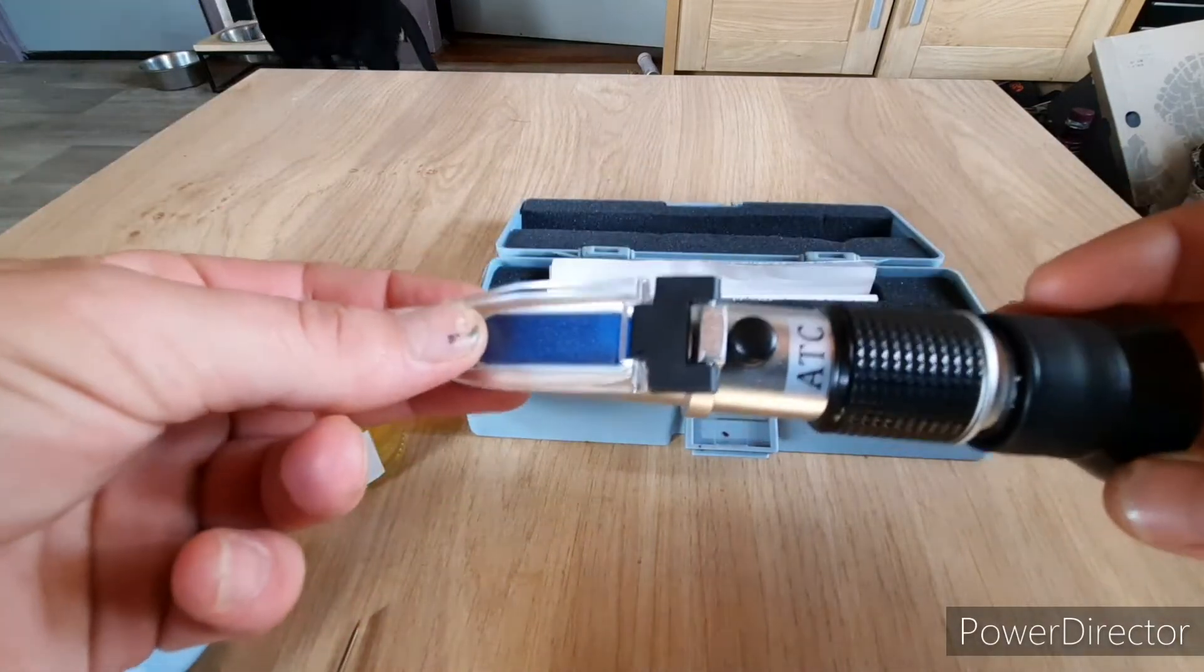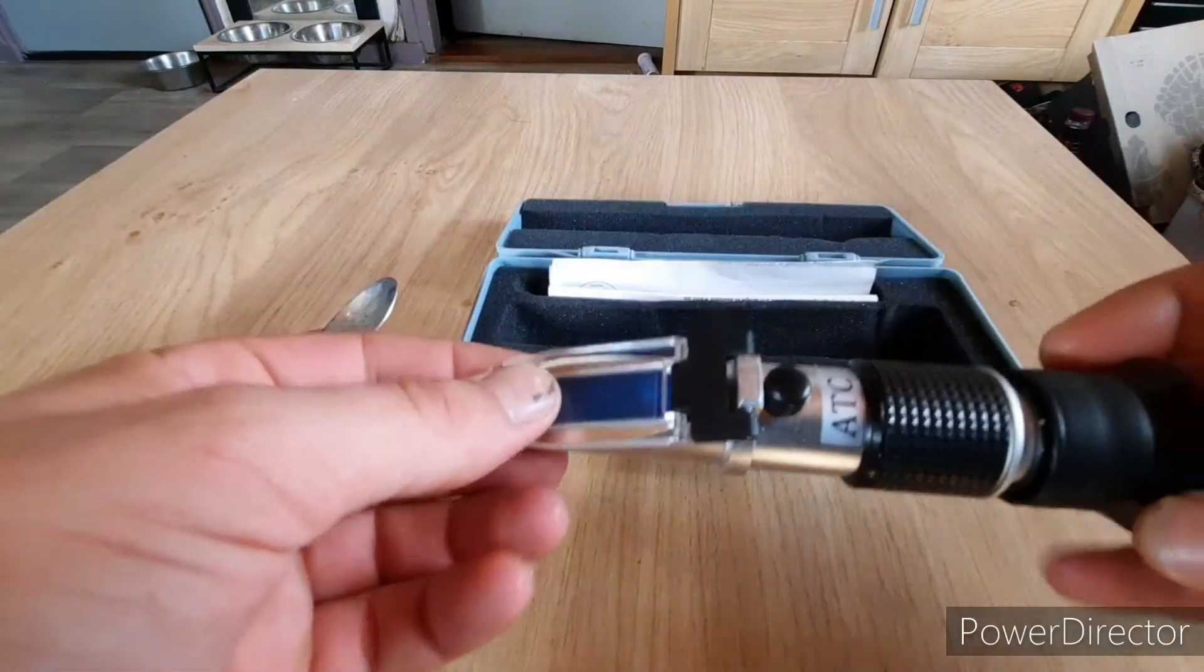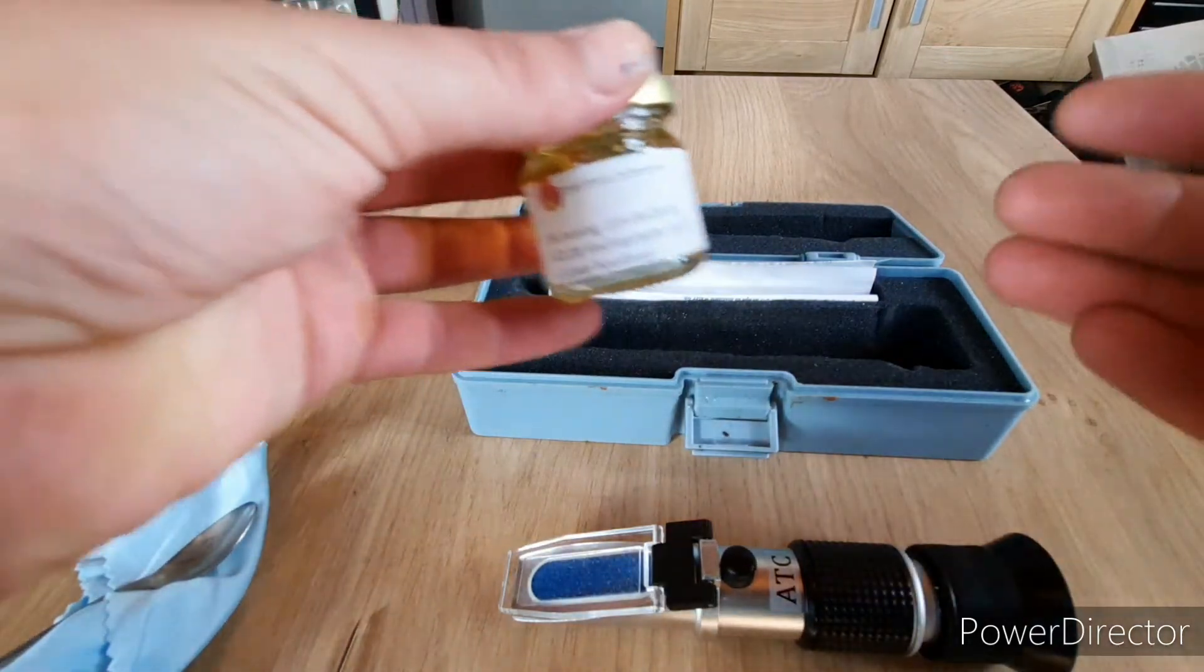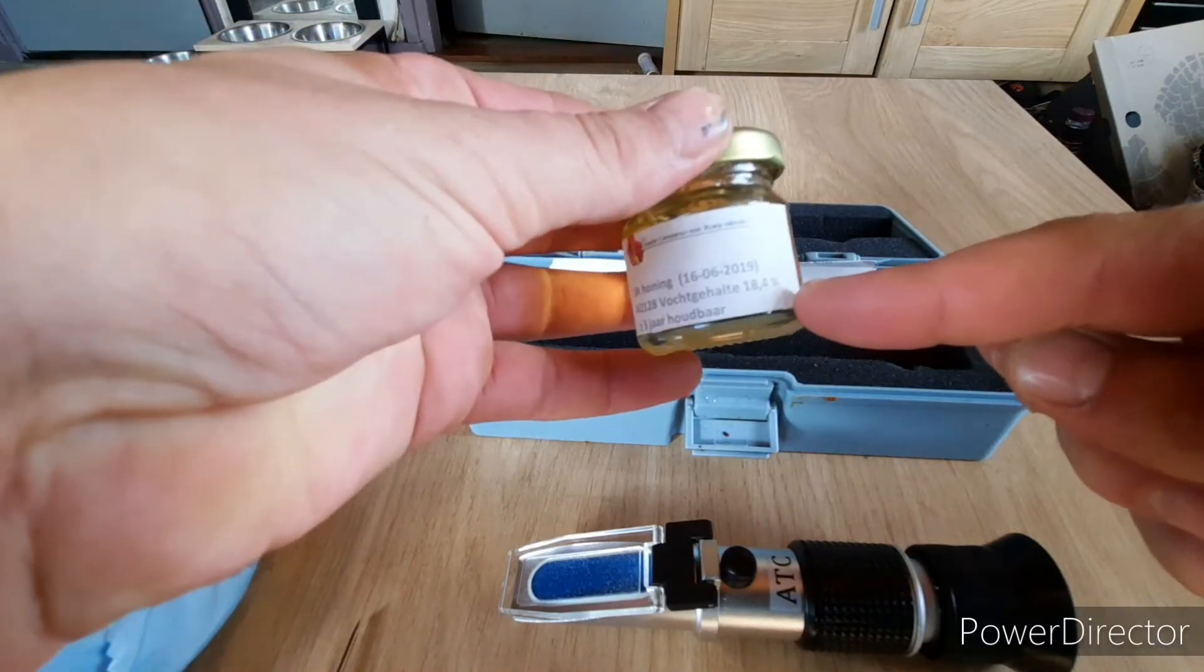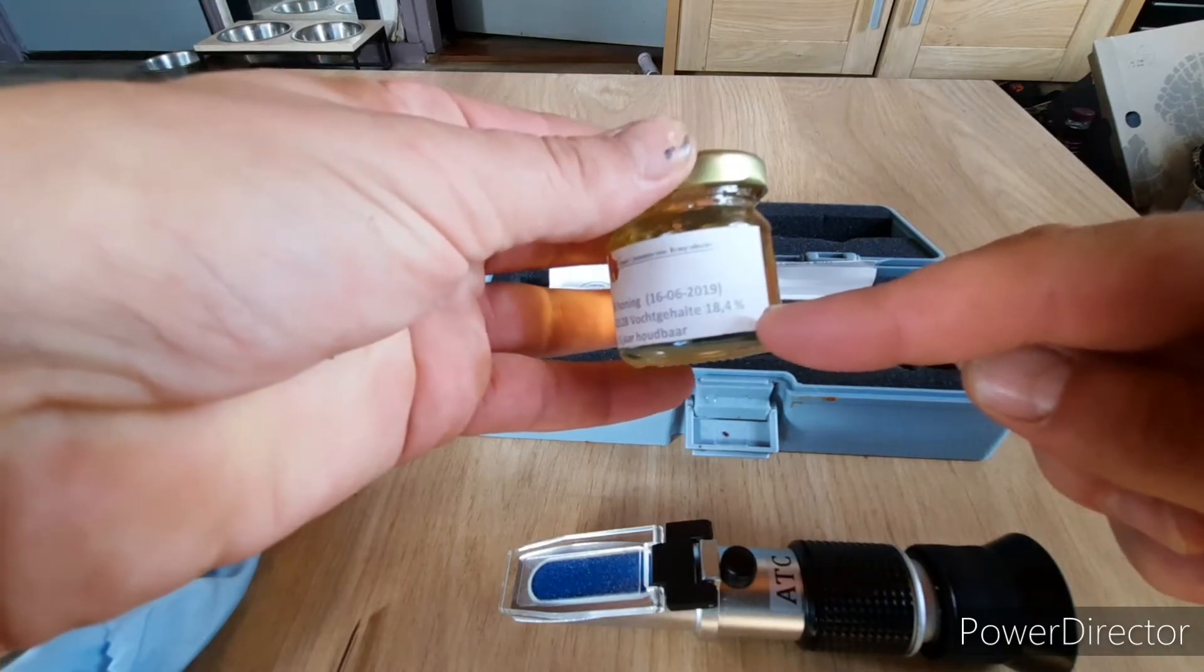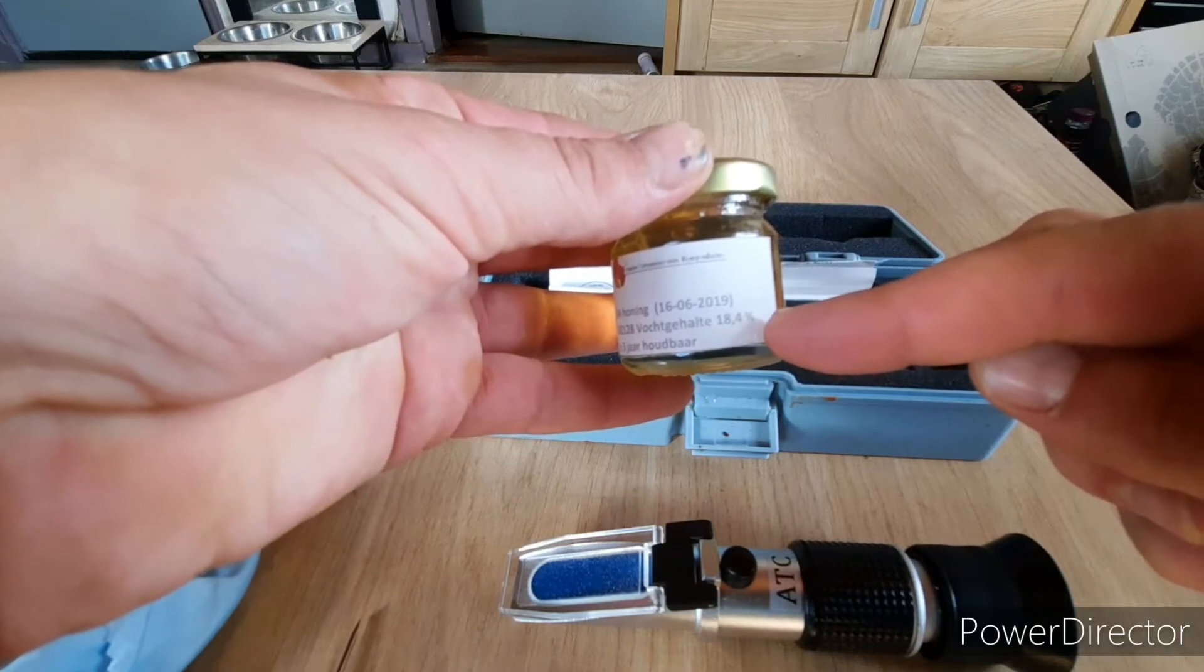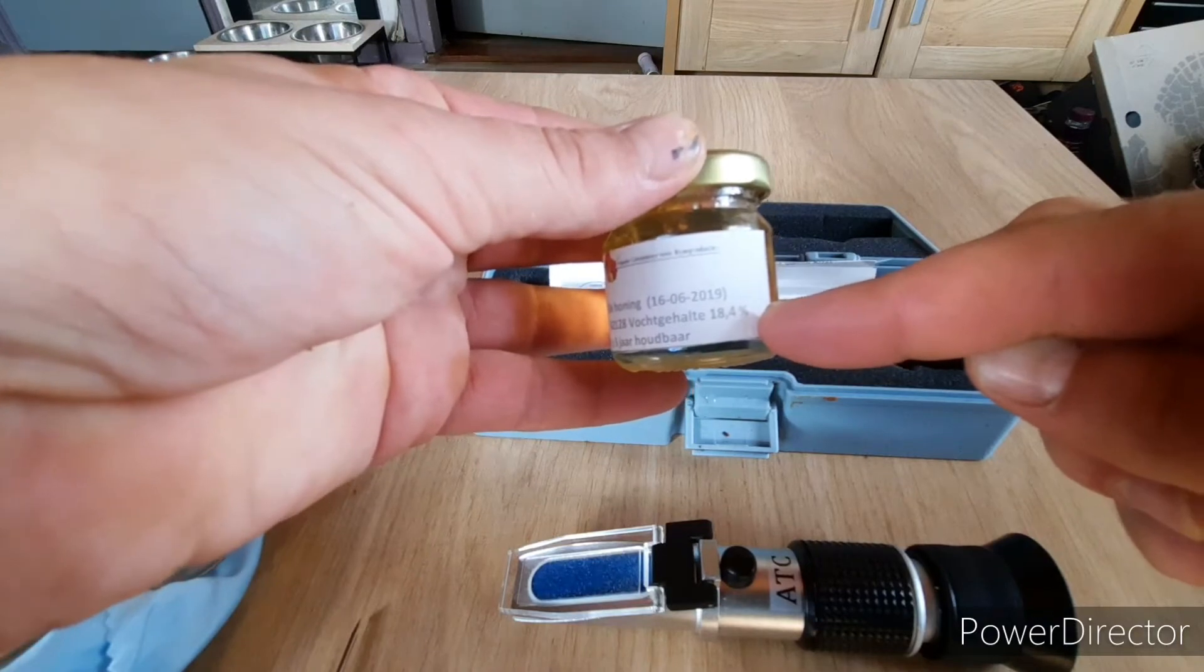Well first we've got to calibrate. We've got some calibration honey which is in fact just honey with a known water content. It says water content 18.4 percent, so it is 81.6 percent sugar. It's just honey where the contents is known.